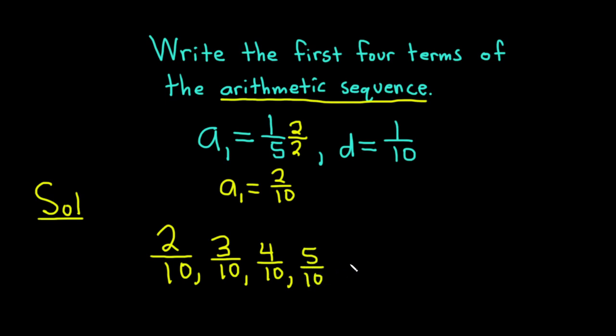And we can keep going. It would be 6 over 10, 7 over 10, etc. It does keep going, but the question wants just the first four terms.